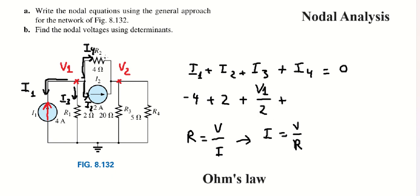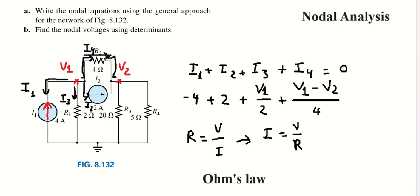For I number four, we can see it goes through this way. However, we have V number two here, so in this case we have V number one minus V number two over four, because V number two goes in the opposite direction, so we need the negative of V number two.